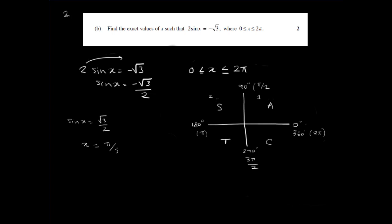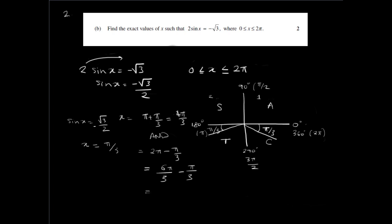Since it's negative root 3 on 2, sine is negative in the third and fourth quadrants. So x equals pi plus pi on 3, which is 4 pi on 3, and also 2 pi minus pi on 3, which is 5 pi on 3. Those are our two answers for x.